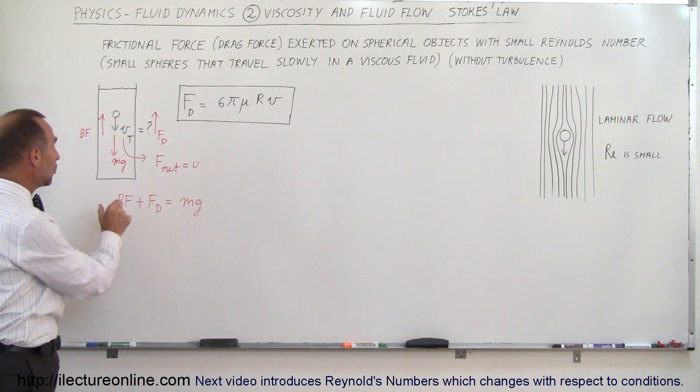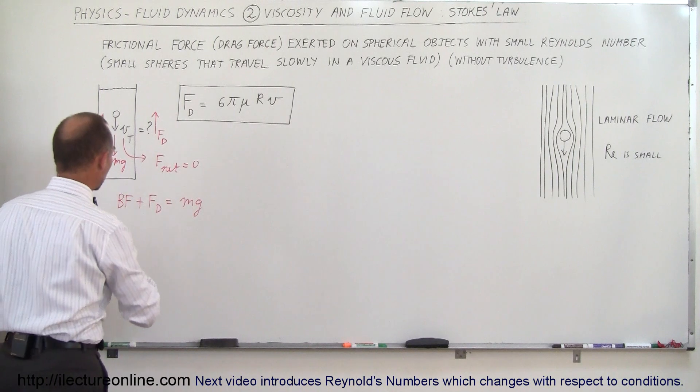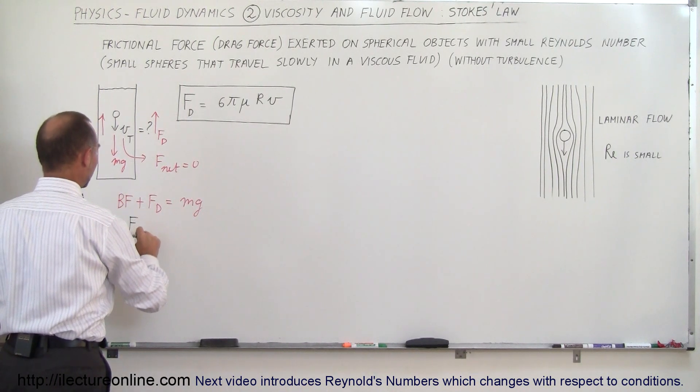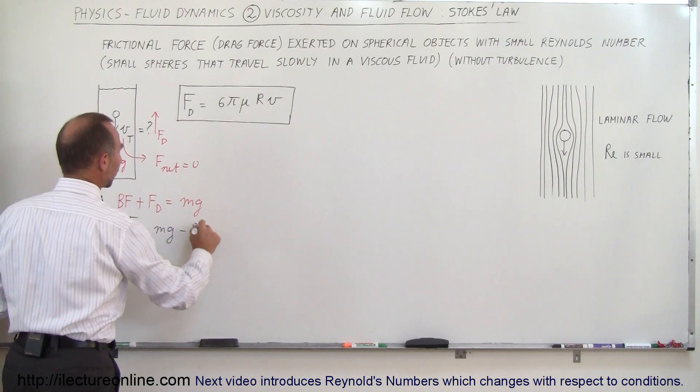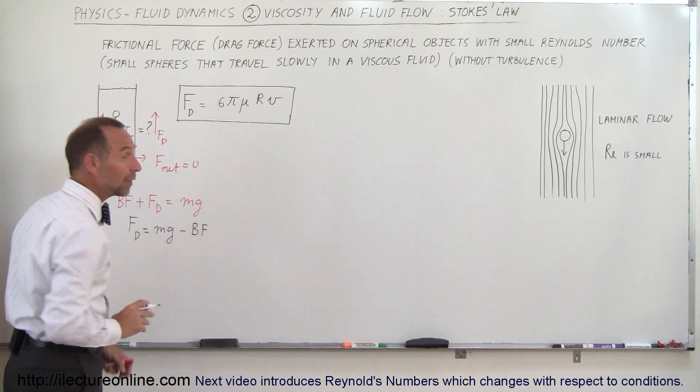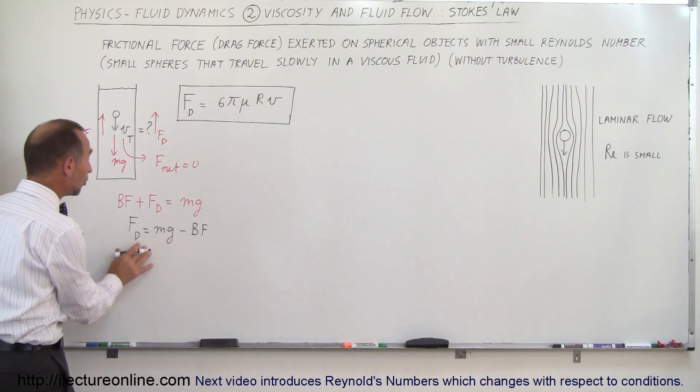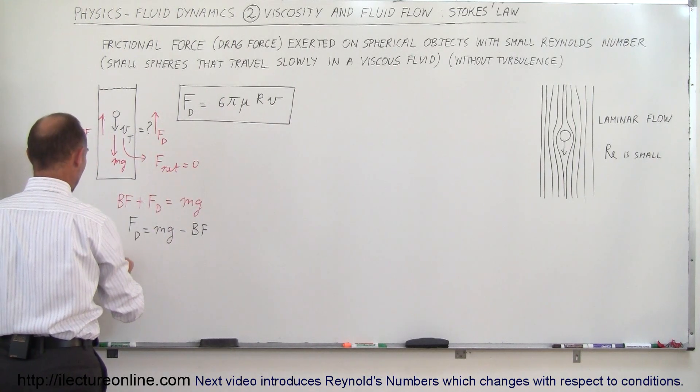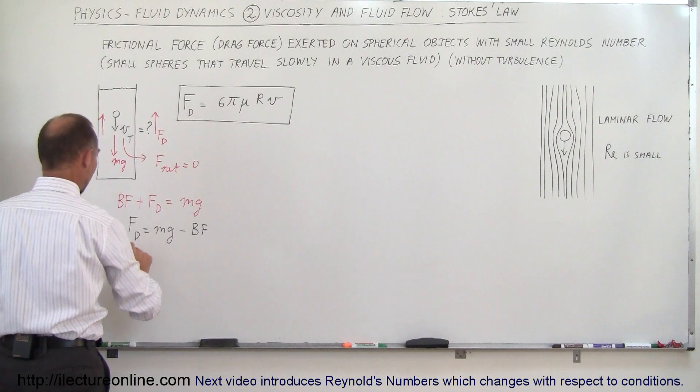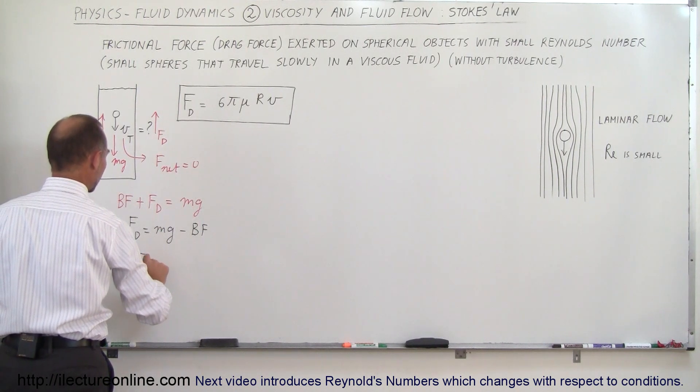So what we're going to do now is move the buoyancy force to the other side. We're going to write that the drag force is equal to the weight of the marble minus the buoyancy force. And now we're going to put down what those things are equal to. Well, first of all, because of Stokes Law, we now know what the drag force is. We know that it is equal to 6πηrv_terminal.